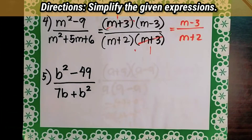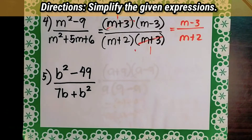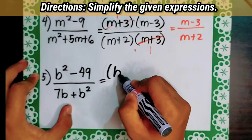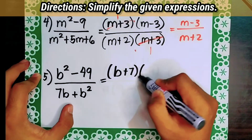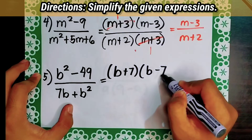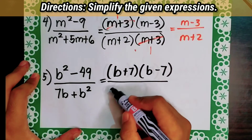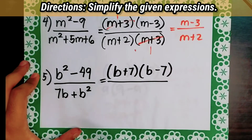Last, number 5. Let's simplify b squared minus 49 all over 7b plus b squared. The numerator — let's factor this using difference of two squares, and the denominator using common monomial factor. The factor of b squared minus 49 is b plus 7 times the quantity b minus 7, over 7b plus b squared — the common factor is b, so let's factor out b.